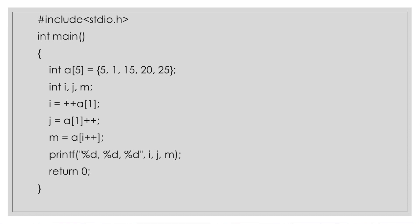Here we see that we have declared one array, integer a, the size is 5 and the values are being given: 5, 10, 15, 20, 25. Thereafter we have integer i, j and m. Now we have i is equal to plus plus a[1], and j is given as a[1] plus plus. So we have pre-increment and post-increment both. m is equal to a[i plus plus]. And finally we are printing the value of i, j and m. So what will be the output?